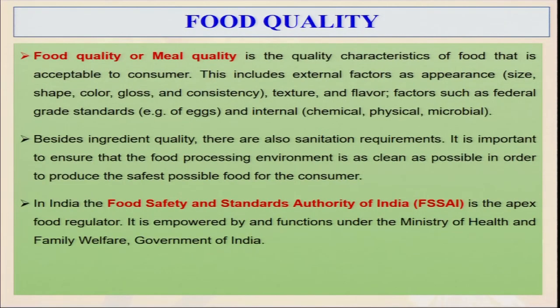We will also learn about different types of food processing, and whatever the food safety regulation acts in India — following which organic farming should be done — only then can we sell our produce not only in the domestic but also in the international market. The definition of food quality: food quality is the quality characteristics of food that are acceptable to the consumer. This includes external factors such as appearance — size, shape, color, gloss, and consistency — also texture and flavor, and factors such as federal grade standards, and internal things like chemical, physical, and microbial properties.